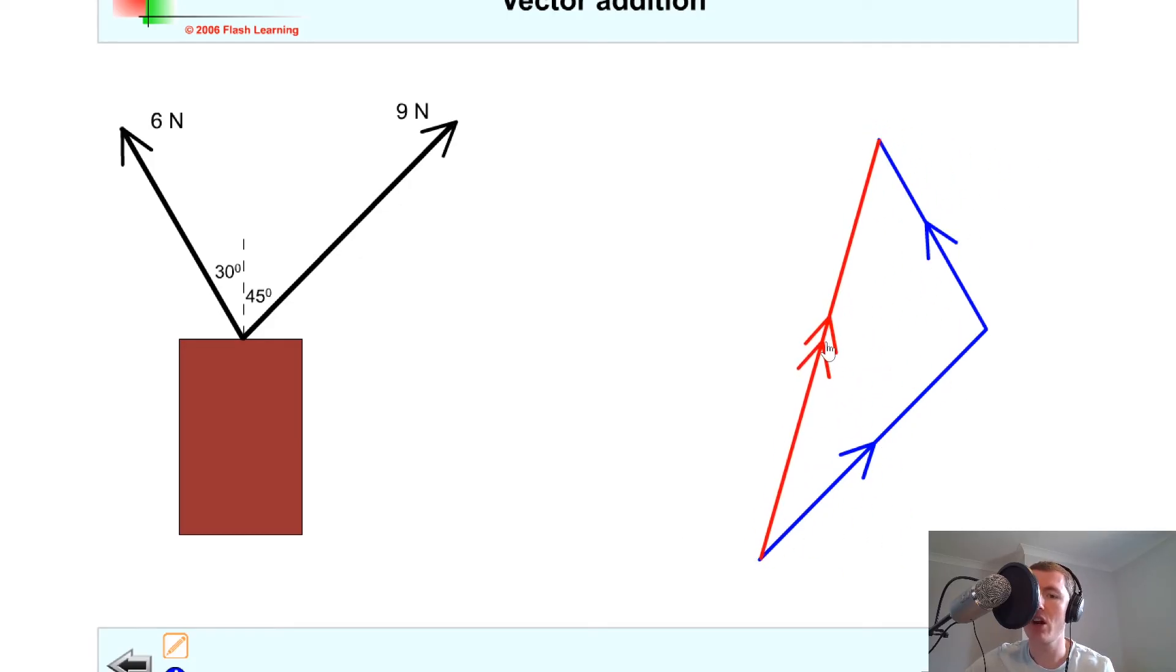Now notice that this angle in here is not actually going to be 90 degrees. So we cannot find the magnitude of this resultant vector using Pythagoras. We would have to do it using the cosine rule because we don't have a right angle in here. Or alternatively, as we said earlier, you could use the scale diagram method instead.